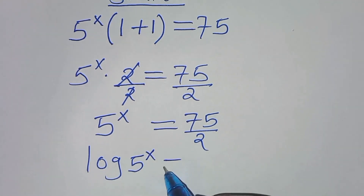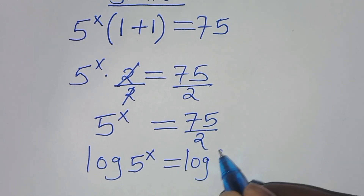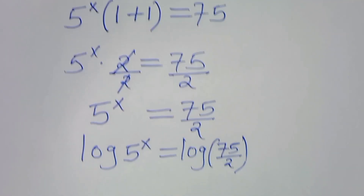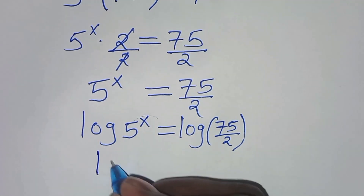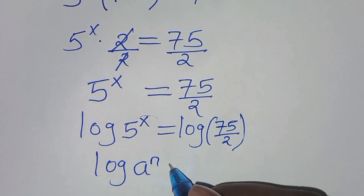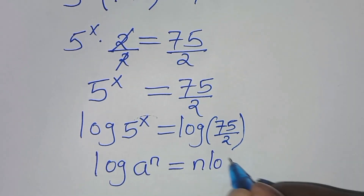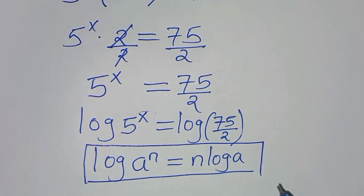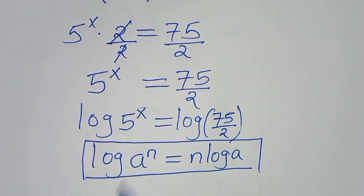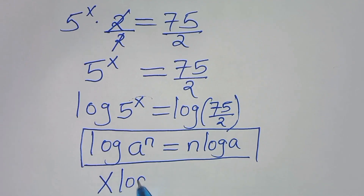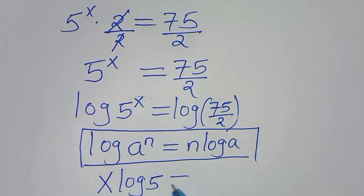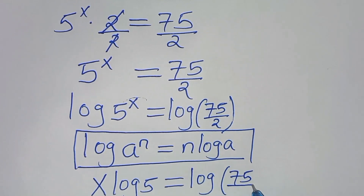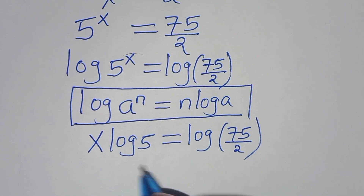To solve for x, we introduce logarithm on both sides: log(5^x) equals log(75/2). Now log(5^x) is in the form log(a^n), which we can express as n·log(a) using the power property of logarithms. This gives us x·log5 equals log(75/2).